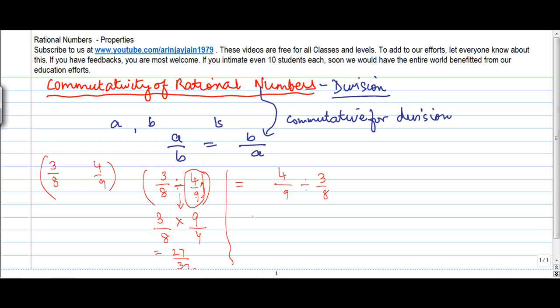Now let's move on to the right hand side. 4 by 9. We make the division into multiplication and reverse the order for the second rational number, 8 by 3. 4 times 8 gives me 32. 9 times 3 gives me 27.